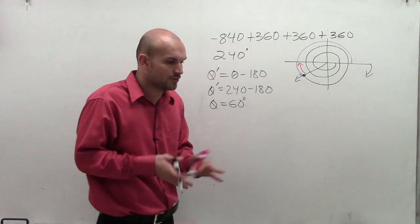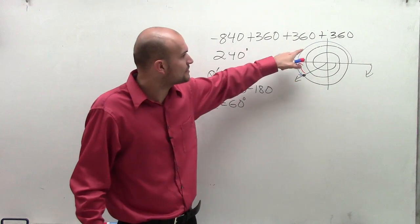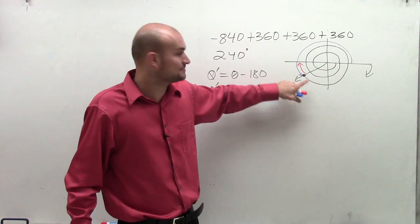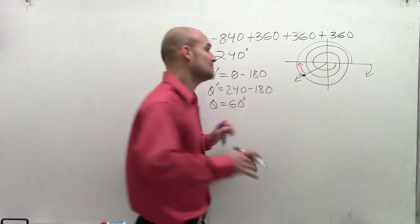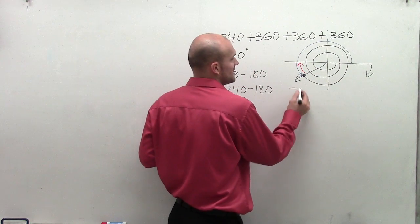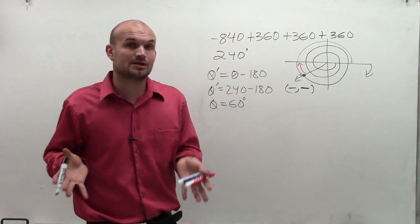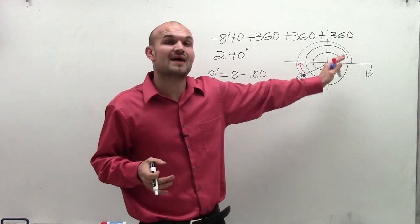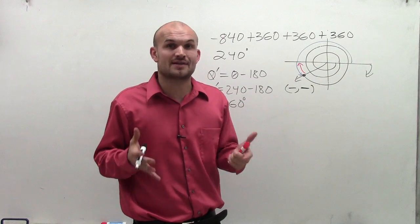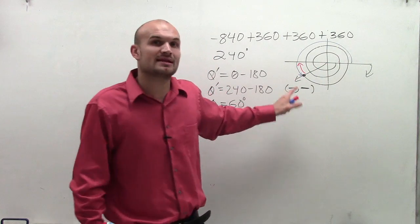So now here's the last point I need to make. We notice that our terminal side is in our third quadrant. In the third quadrant, we need to make sure that we understand that the x-coordinate and the y-coordinate are going to be negative. So even though I'm going to use the reference angle to find the x and y values on the unit circle, I need to remember that they're both negative.